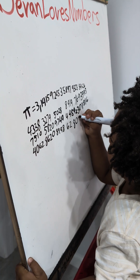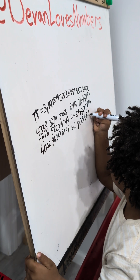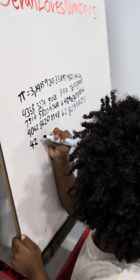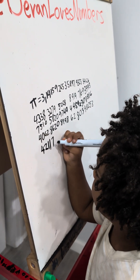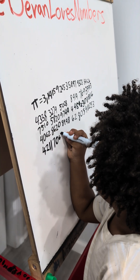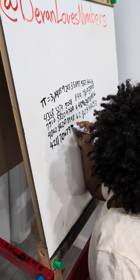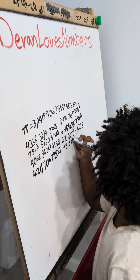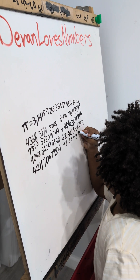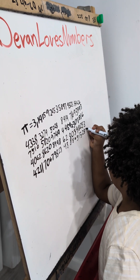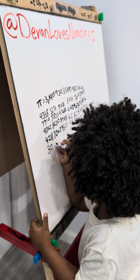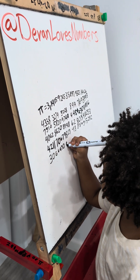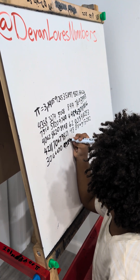6, 5, 1, 3, 2, 8, 2, 3, 0, 6, 6, 4, 7, 0, 9, 3, 8, 4, 4, 6, 0, 9, 5, 5, 0, 5, 8, 2, 2, 3, 1, 7, 2, 5, 3, 5, 9, 4, 9, 4, 0, 8, 1, 2, 8, 4, 8, 1, 1, 1, 7, 4, 5, 0, 2, 8, 4, 1, 0, 2, 7.